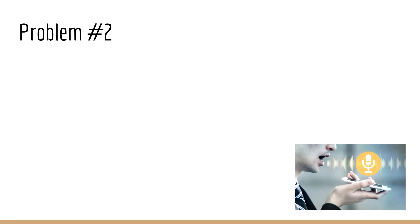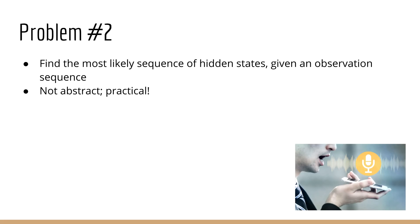Problem number two is finding the most likely sequence of hidden states given an observation. Again that might sound abstract but in fact it is quite practical.